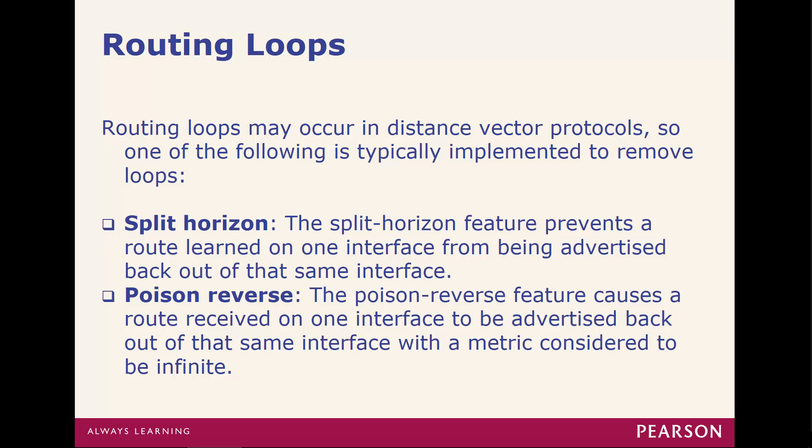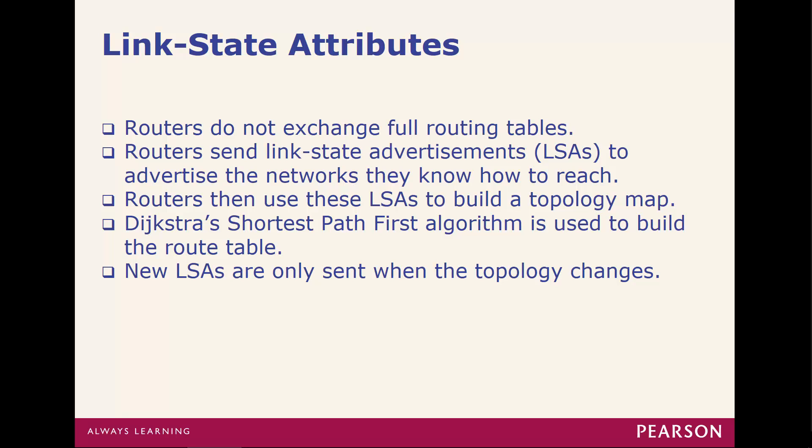Essentially, if I learn a network based on one interface, I will not send that network back out that interface. Link state attributes: routers do not exchange full route tables. Routers send link state advertisements, or LSAs, to advertise the networks they know how to reach. The routers then use the LSAs to build a topology map, using the shortest path first algorithm to build a routing table. New LSAs are only sent when topology changes, meaning we don't have to send the entire route table if no changes were made — and even if a change is made, we only send the portion that changed.